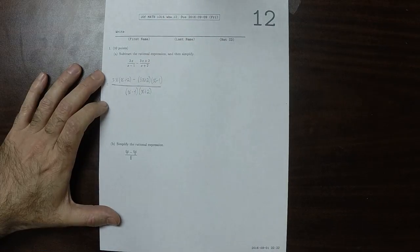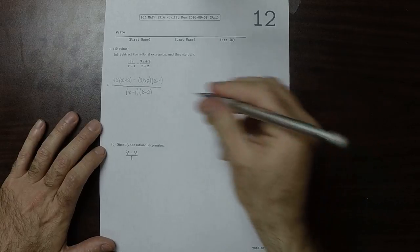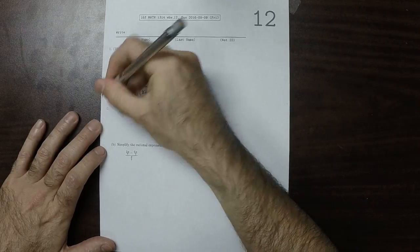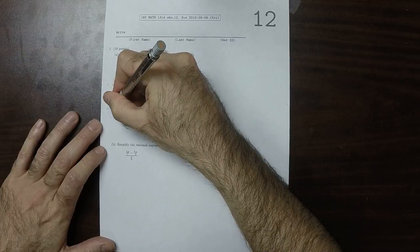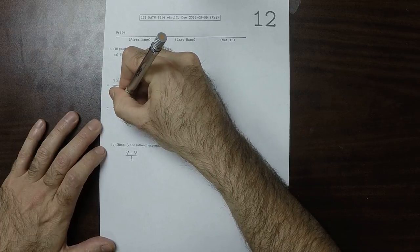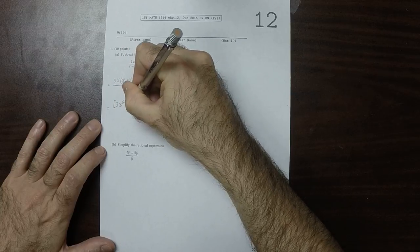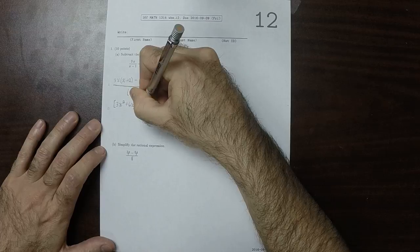Now I'm going to simplify the numerator. I'm not going to simplify the denominator yet. So this would be 3x squared plus 6x and then minus.